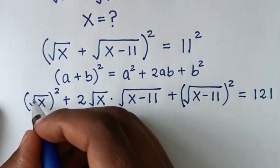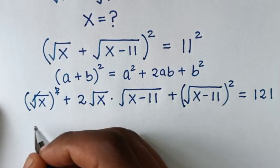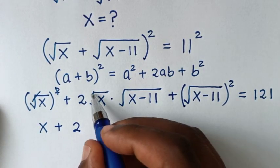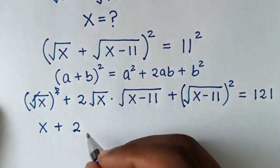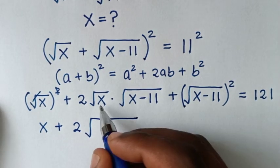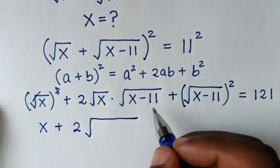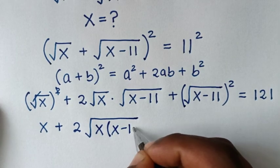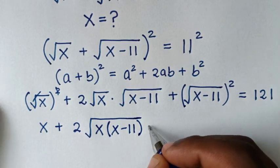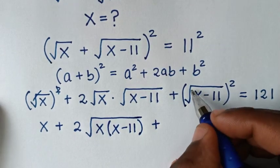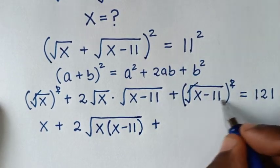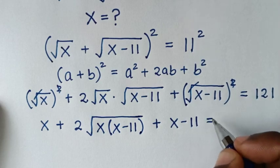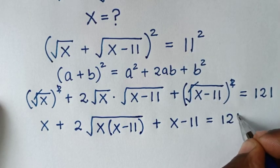In the next step, the square root and the square cancel each other. So it becomes x, plus 2 times the square root of x(x−11), plus x minus 11, is equal to 121.